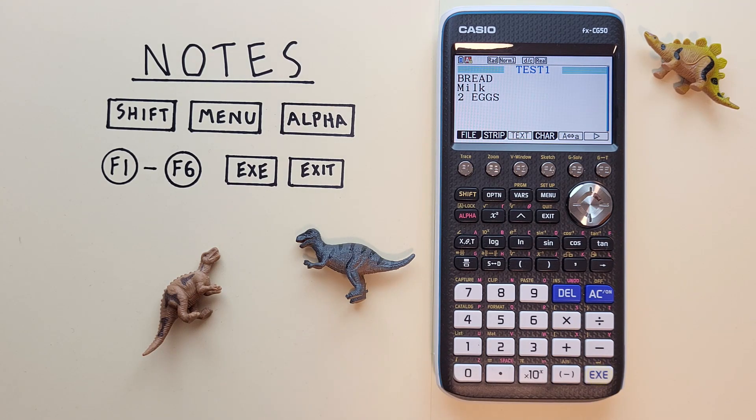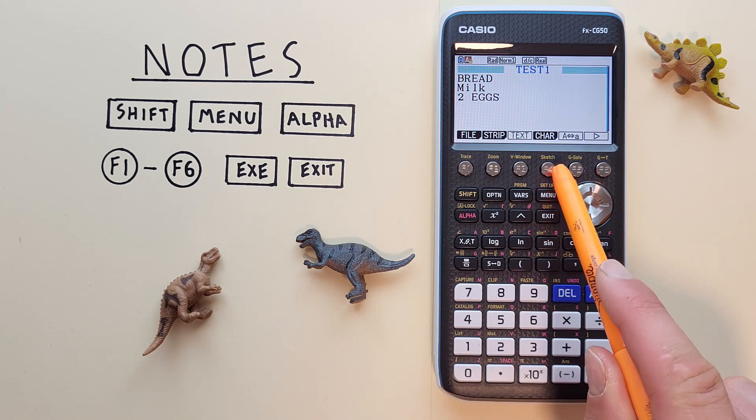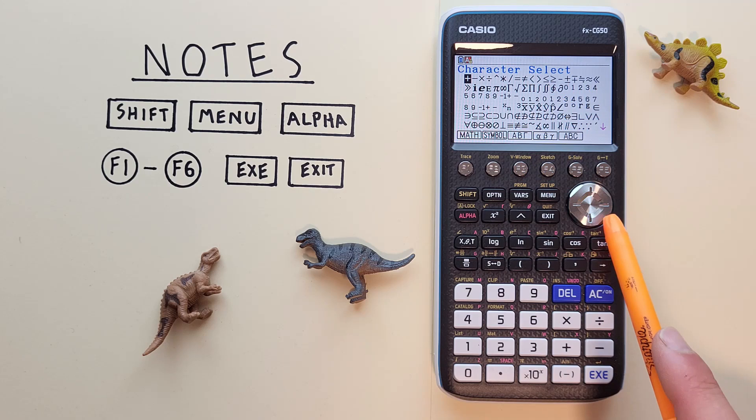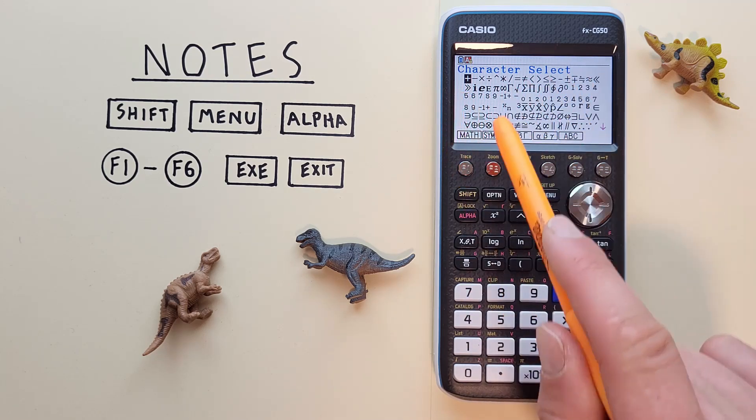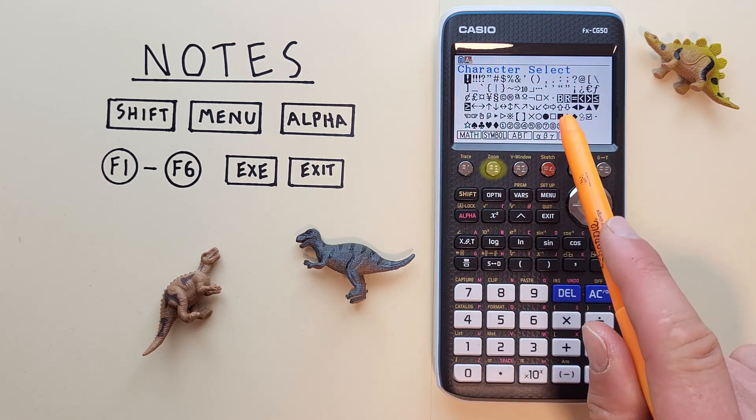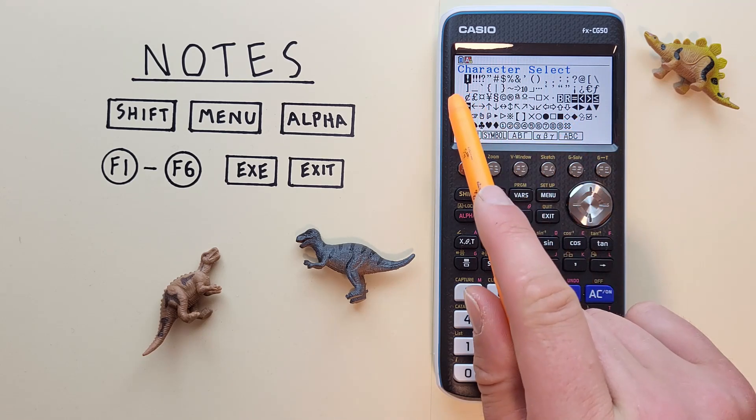We can also enter various other characters or symbols. If we hit F4 for characters, we see this entire list. So we got a number of math characters here, a number of symbols here. We got our exclamation marks, our question marks.